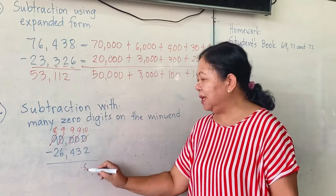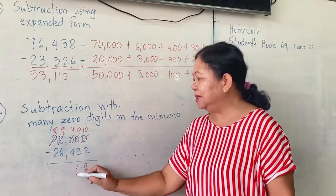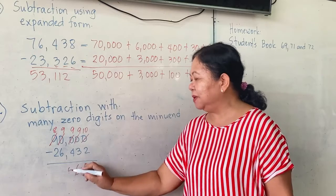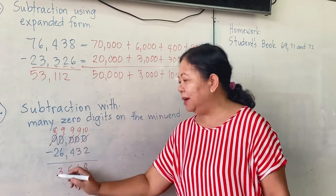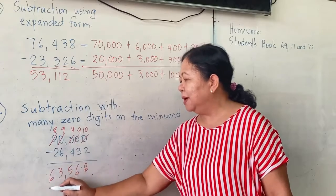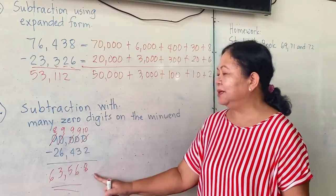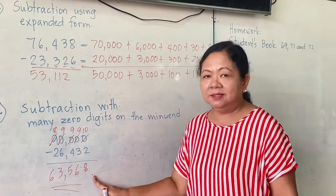Then, 10 minus 2 is 8. 9 minus 3 is 6. 9 minus 4 is 5. 9 minus 6 is 3. 8 minus 2 is 6. So, the answer is 63,568.